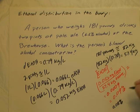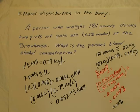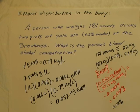The legal limit to drive in the state of Minnesota is 0.08%. So after drinking two pints of ale at the brew house in Duluth, this person should definitely not be driving home and should get a ride from a friend, call a cab, or walk. There's a similar problem illustrated in the rest of the post, so try to solve that.